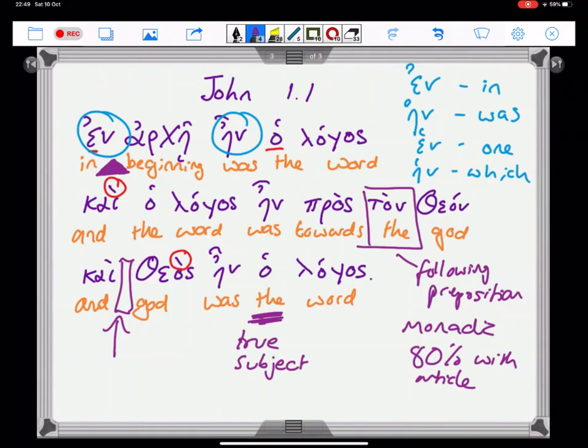And you'll learn more about articles and word order as we go along. But the true subject of the sentence is the one with the article. And therefore, God cannot have an article. Otherwise, it would be 'God was the word' and not 'the word was God.'